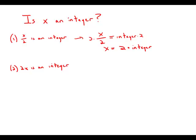Well, if we take any integer and multiply it by 2, it's still an integer. And so if x equals 2 times an integer, it definitely is an integer. This statement is sufficient.